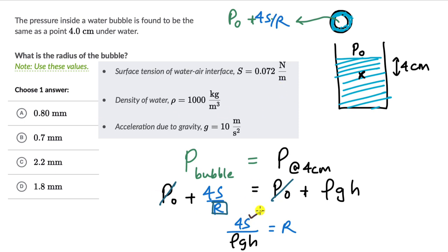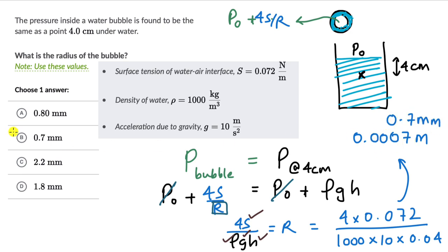Now let's put in the values, we know what S is, it's given in the question, we know what rho is, and as well as H, we can change it to meters to keep everything consistent. So when we put in the values, this becomes equal to 4 into 0.072 divided by 1000 into 10 into H, which is 0.04. I encourage you to pause the video and work out this calculation. When you work this out, this will come out to be equal to 0.0007 meters. And when you change it to millimeters, you will get the answer as 0.7 millimeters. And that is option B.